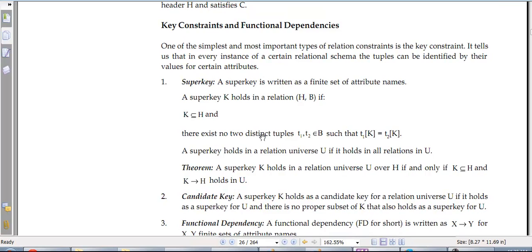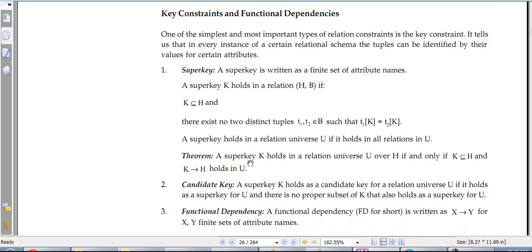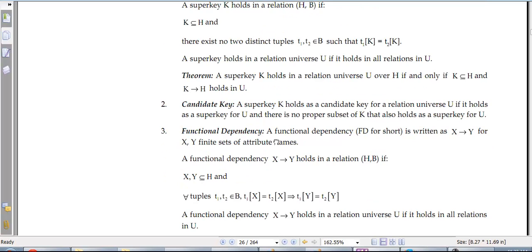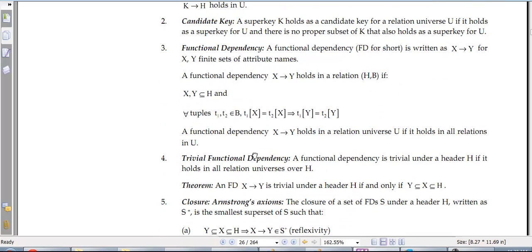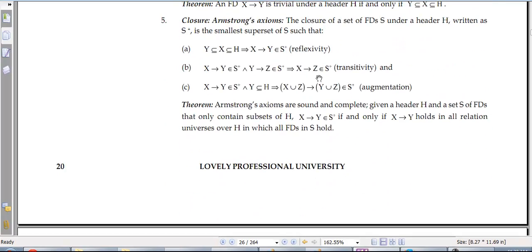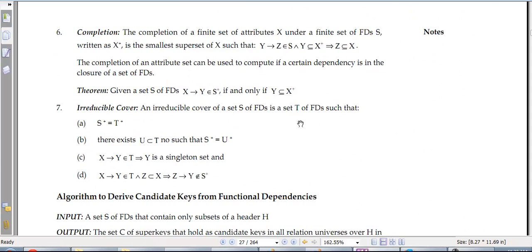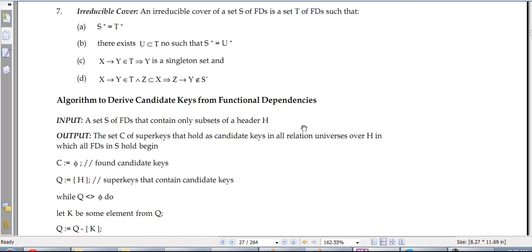Now key constraints and functional dependencies. One of the simplest and most important types of relation constraints is the key constraint, which tells that tuples can be identified by certain values. So a superkey is written as a finite set of attribute names. Then we have candidate key, functional dependency, trivial functional dependency, closure, Armstrong's axioms, completion, and irreducible cover.